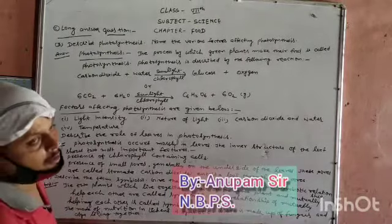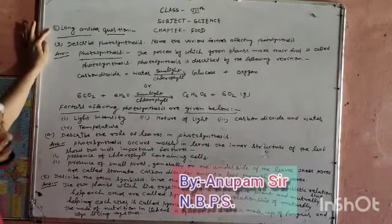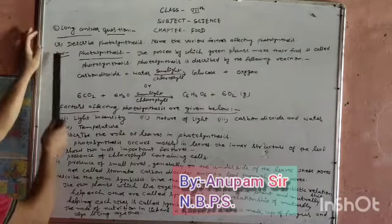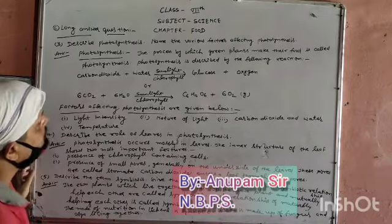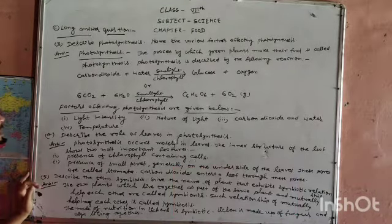Class 7 Science, Chapter Food. Question number 3: Describe photosynthesis and the various factors affecting photosynthesis.